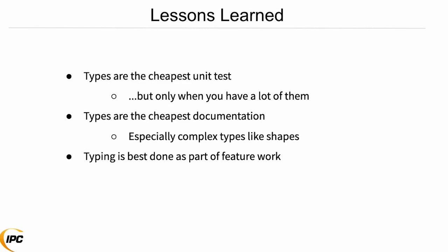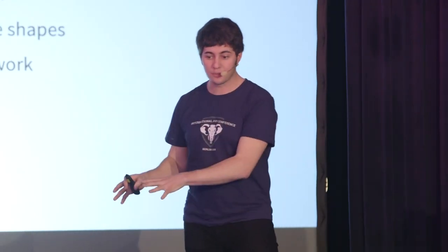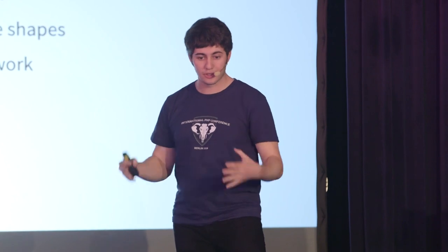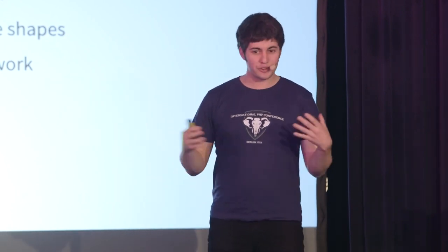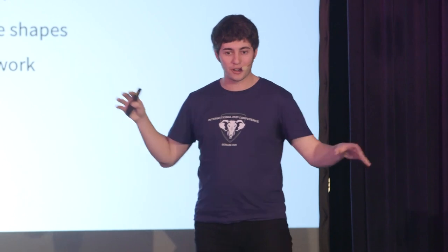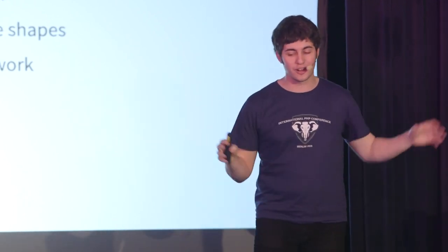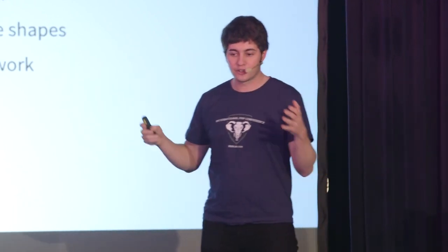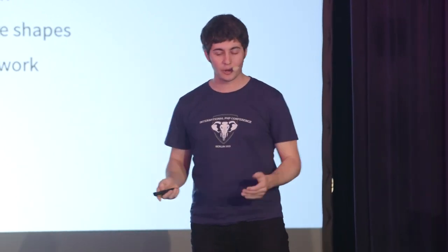I also learned that typing is best done as part of feature work. When you're actually working on code for other reasons, that's where you go in and add types — because you already have eyes on it, you have QA, you're testing it, you know what's going on. If you try to just go type some stuff without doing that work, it's hard to know where to stop, and you end up with this big spider web of a PR that's touching every file. It's better to do typing in the code you're actually working on anyway.